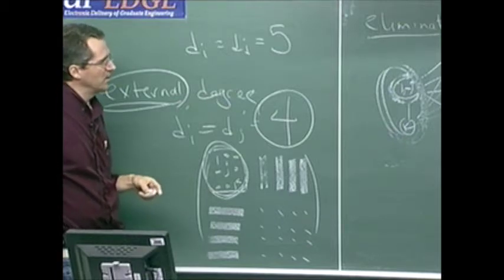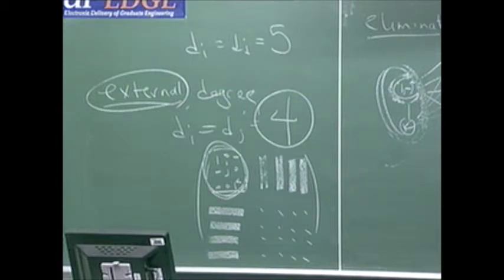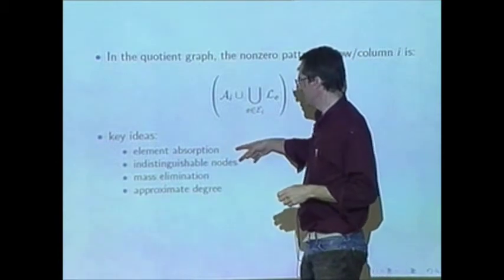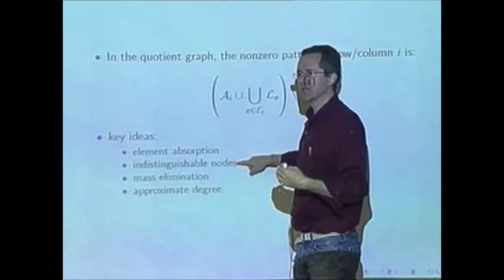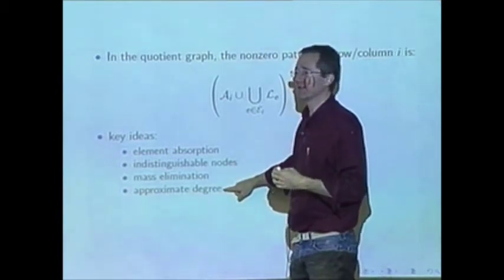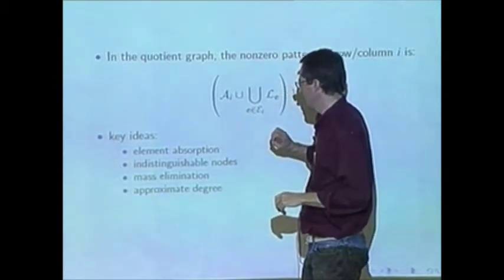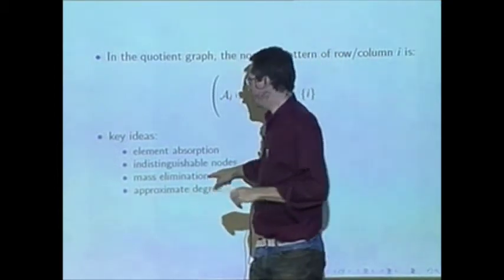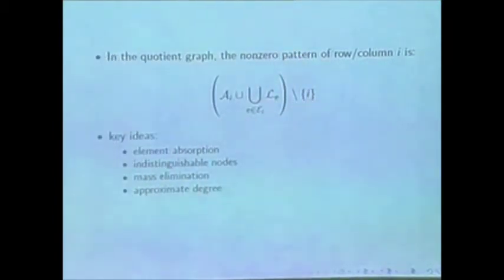Use the external degree, not the true degree. So with element absorption and indistinguishable nodes comes the notion of external degree. We haven't gotten to approximate yet. Now there's one more thing: mass elimination, which is sort of like a last-minute detection of indistinguishability.